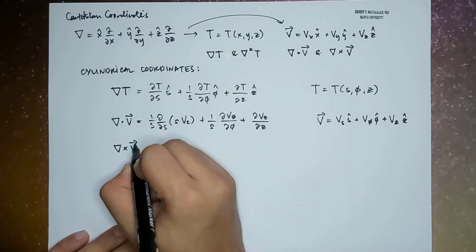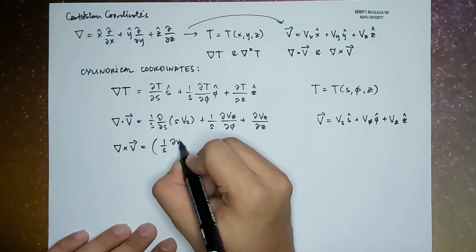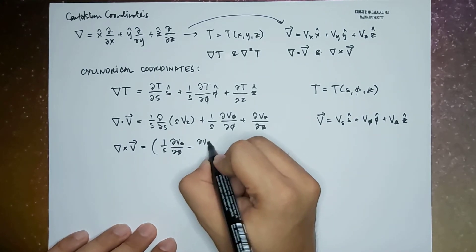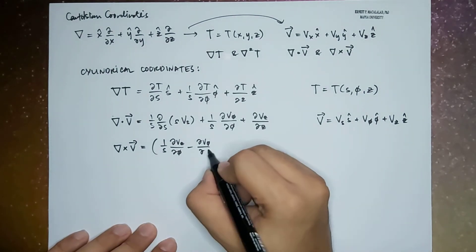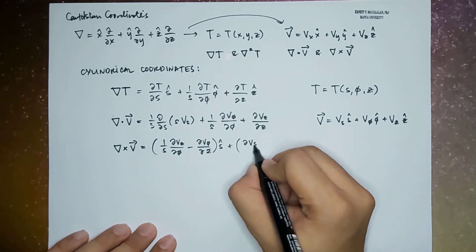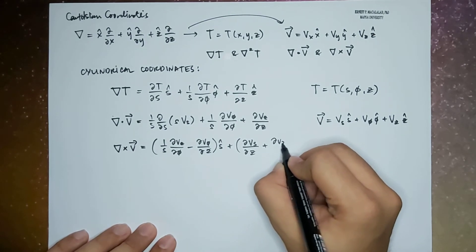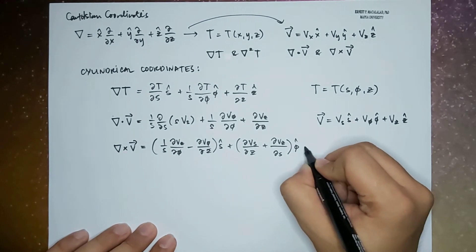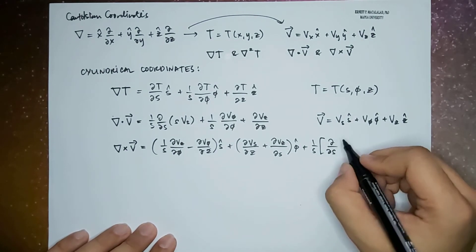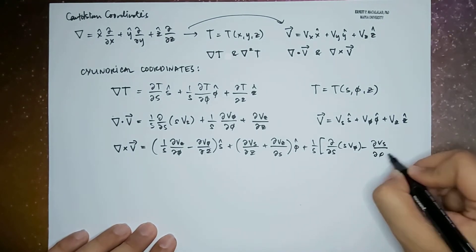And the curl of the same vector field is given by: 1 over s times the derivative of v_z with respect to phi minus the derivative of v_phi with respect to z, all times s-hat; plus the derivative of v_s with respect to z minus the derivative of v_z with respect to s, times phi-hat; plus 1 over s times the derivative with respect to s of s·v_phi minus the derivative of v_s with respect to phi, times z-hat.